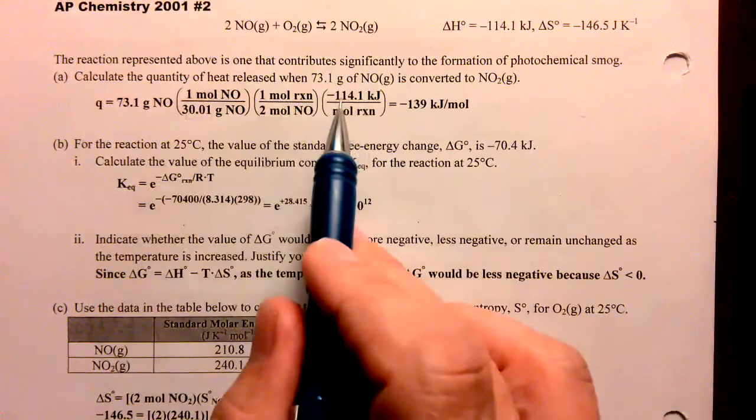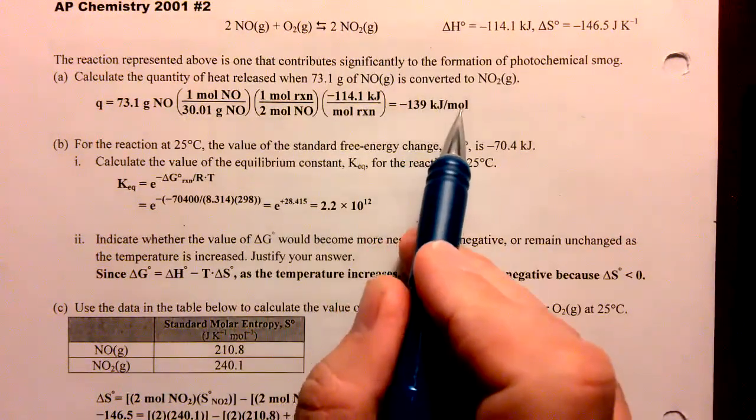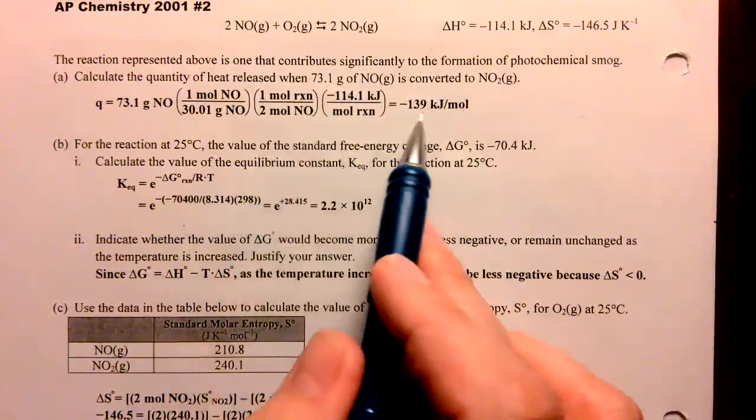Multiplied by the delta H standard, and that will be the kilojoules per mole of chemical. Notice that it's per mole of chemical on the bottom there that you will get.